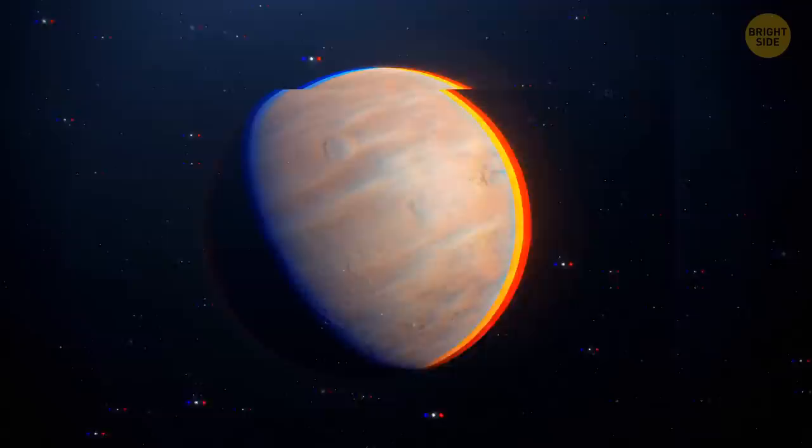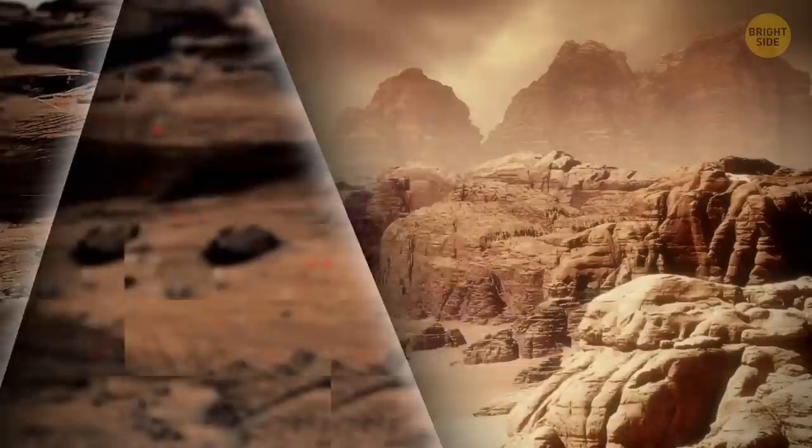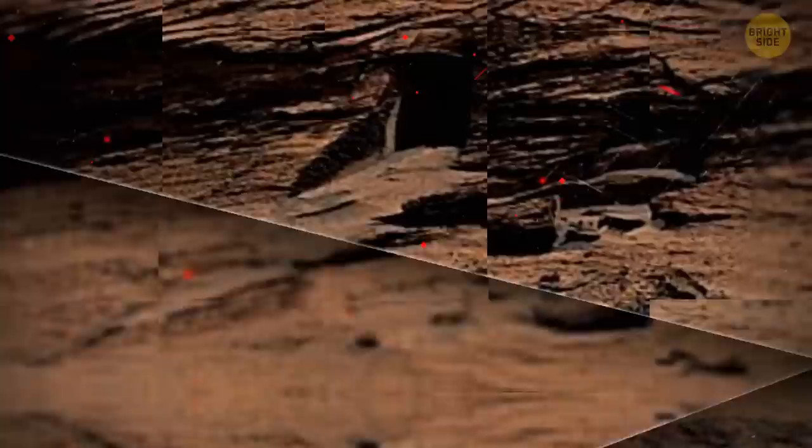They likely appeared around 4 billion years ago in a river or a windblown dune. Since the strata became visible, powerful Martian winds have eroded them even more. And now, you can see that they disappear inside the door.